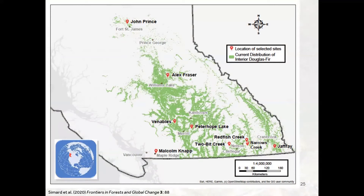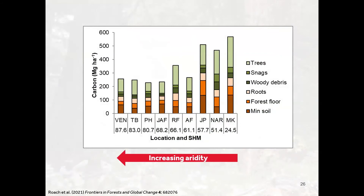We've got different sites planted across various locations, primarily focused on interior Douglas fir but also including coastal Douglas fir. There's quite a wide range of climates and soils. As we move into forests of increasing aridity we get less overall carbon storage, and we've been doing work on how different types of harvesting impact the carbon that's in situ in these different forests.